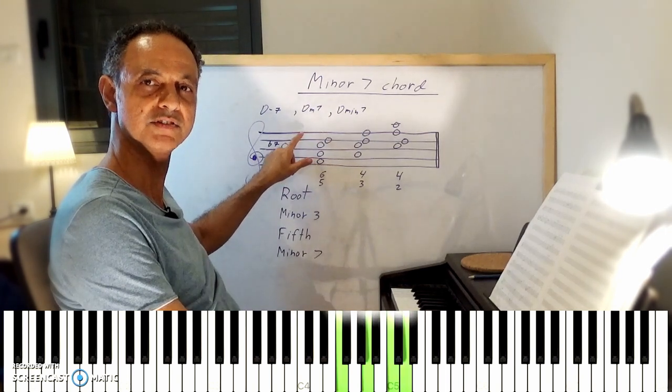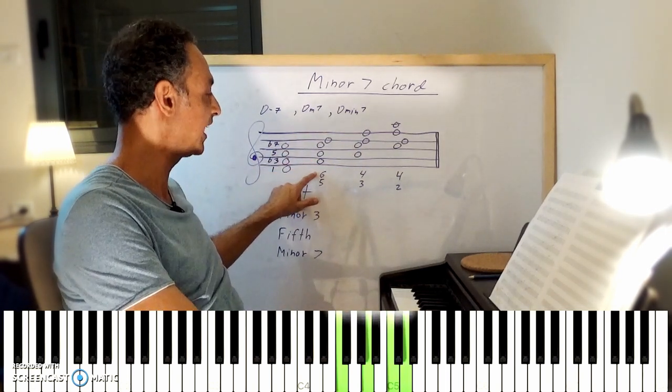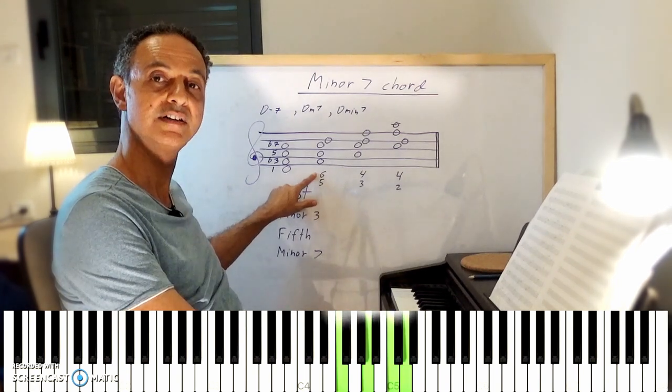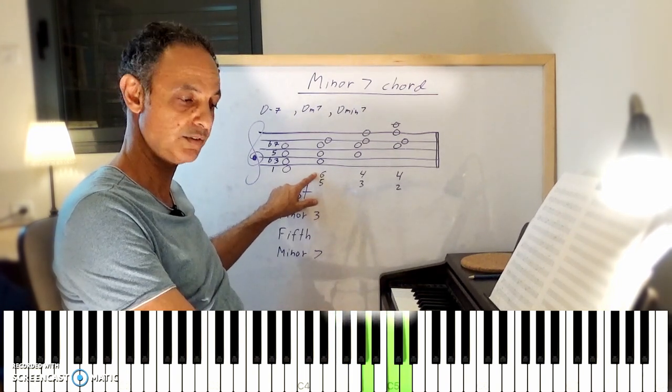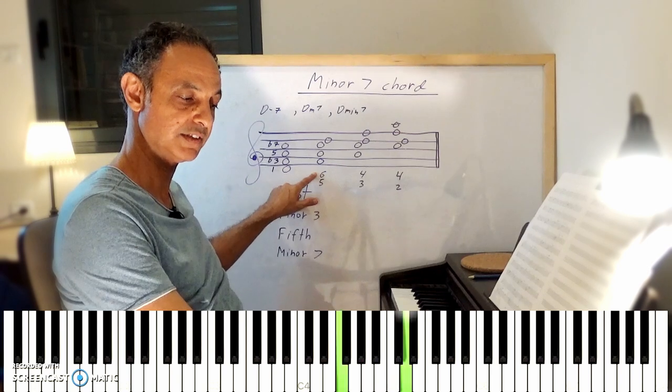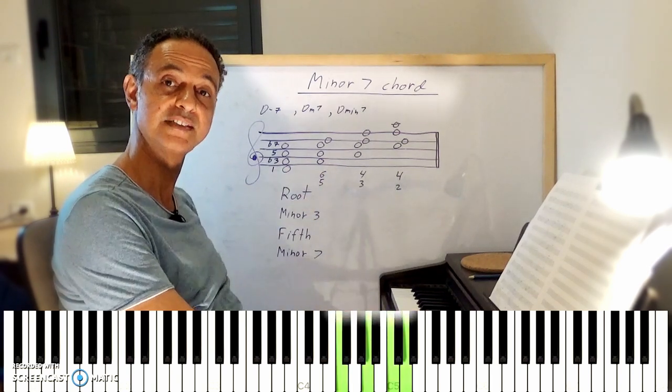The first inversion is also called 6-5. Why 6-5? Take a look: 1, 2, 3, 4, 5, 6. 1, 2, 3, 4, 5. 6-5.